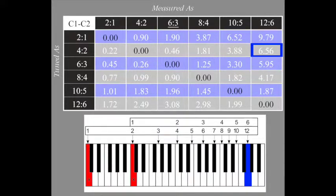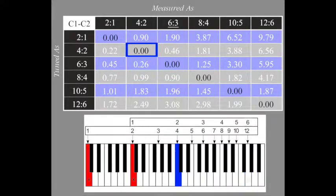We will first tune C1 to C2 as a 4-2 octave. We will use a filter to highlight beating at each partial level. As we do so,